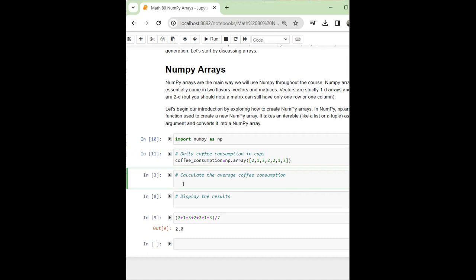In the next step, I'm going to define a new variable, average_coffee, which is np.mean. I'm going to calculate the mean of the variable that I defined here, open parenthesis, and I'm going to copy and paste my coffee_consumption here.